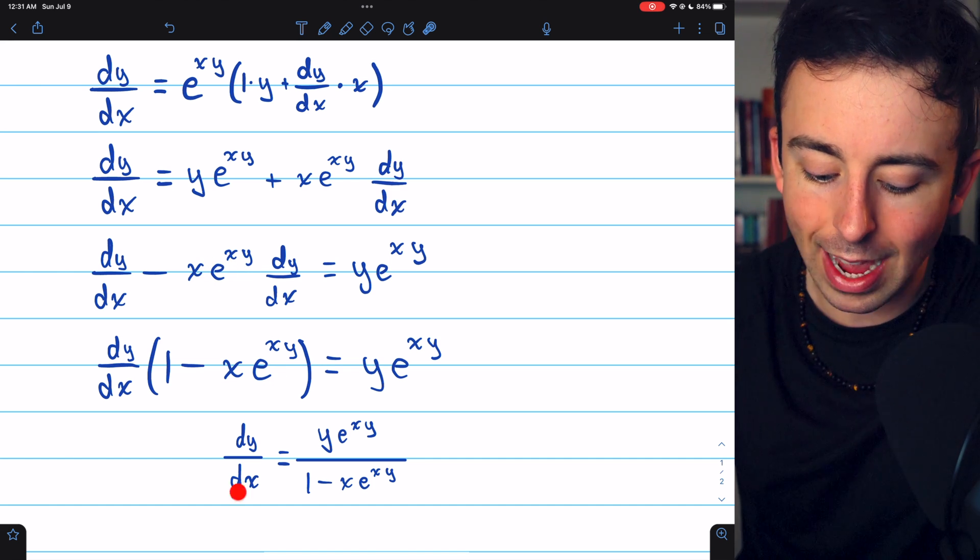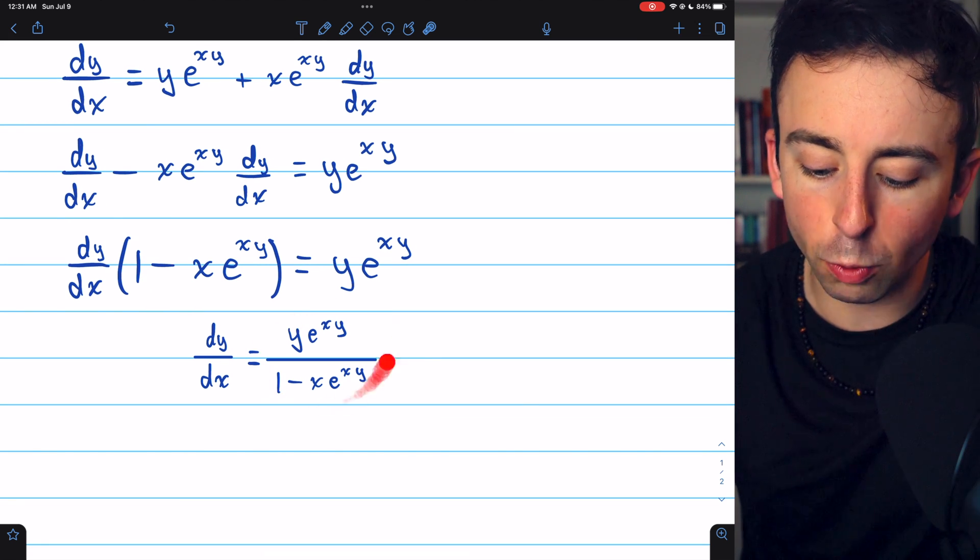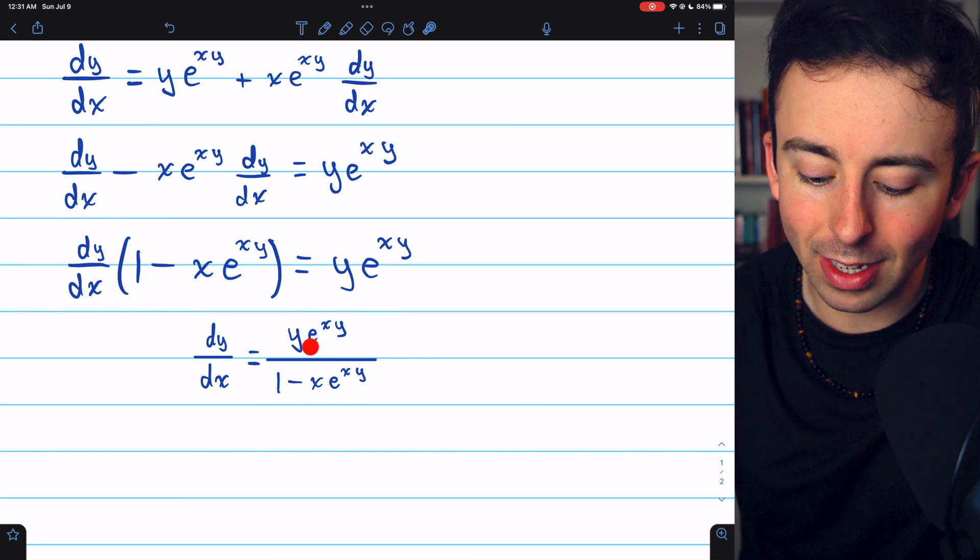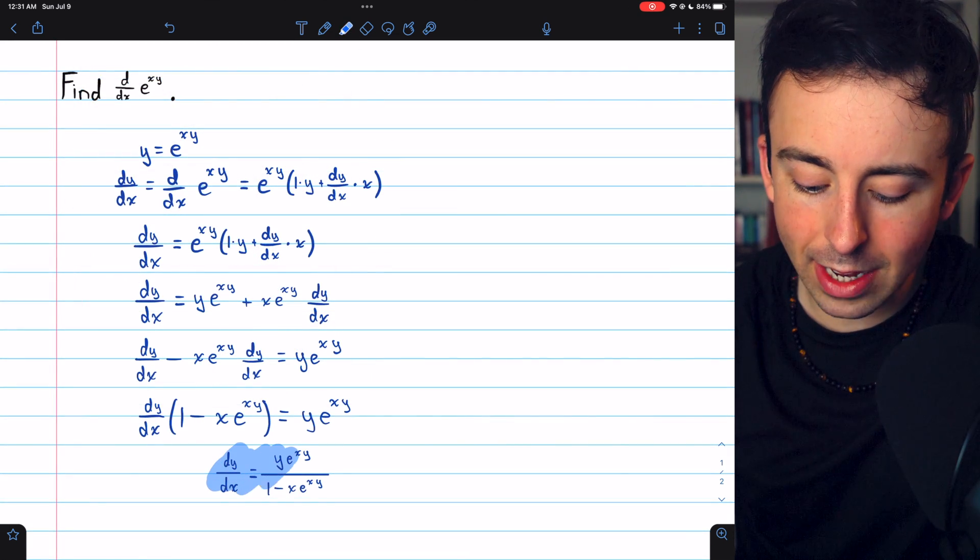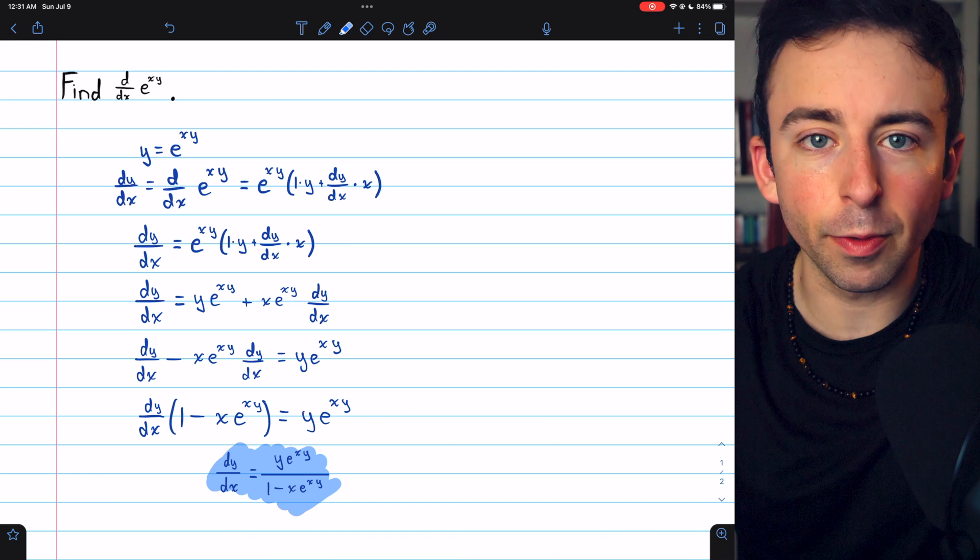and that leaves dy dx by itself on the left. And the derivative on the right is y times e to the xy, all divided by 1 minus x e to the xy. And that's how we find the derivative of e to the xy using implicit differentiation.